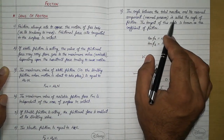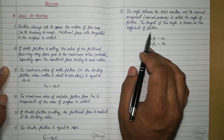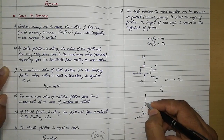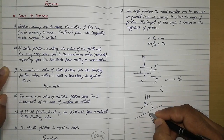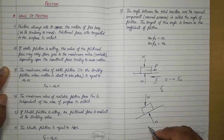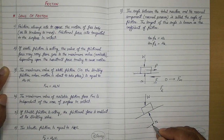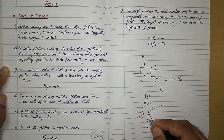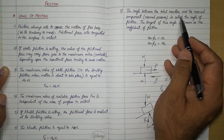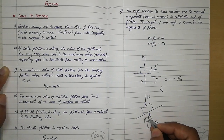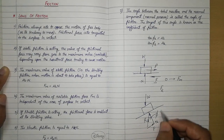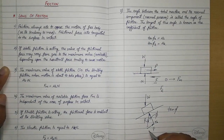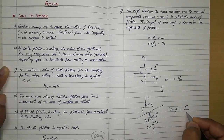The angle between the total reaction and its normal component — the normal pressure — is called the angle of friction. The tangent of this angle is known as the coefficient of friction. Suppose a body rests on an inclined surface: its weight acts vertically downward, it receives a normal pressure at 90 degrees to the surface, and friction acts tangentially opposing downward tendency. Applying the triangle law, the total reaction R is introduced. The angle φ between the total reaction and the normal pressure is the angle of friction. Then tan φ = perpendicular/base = F/N.